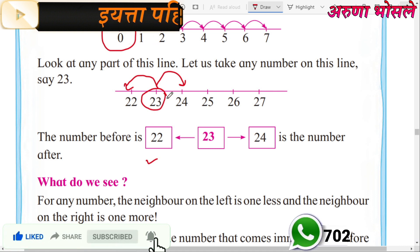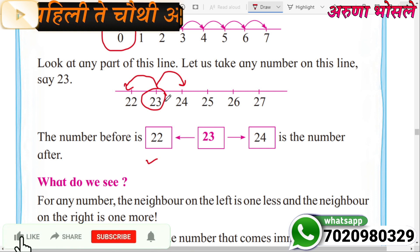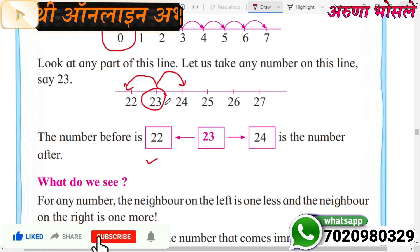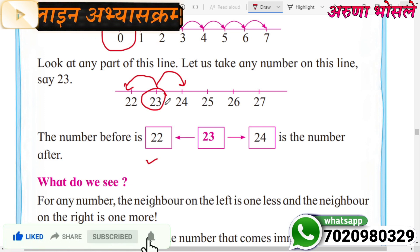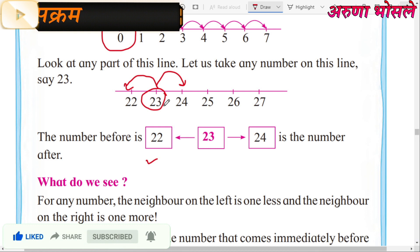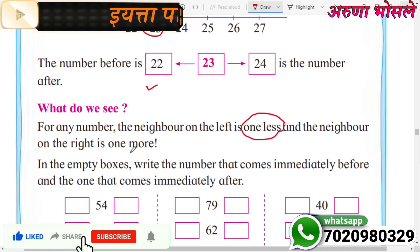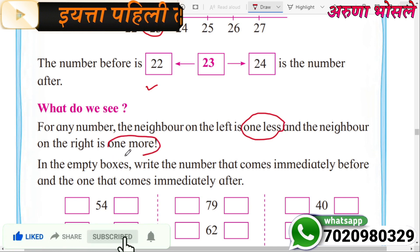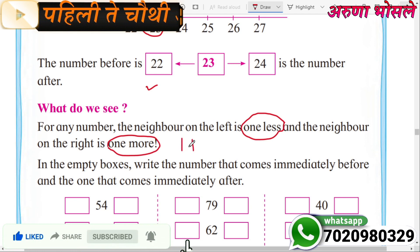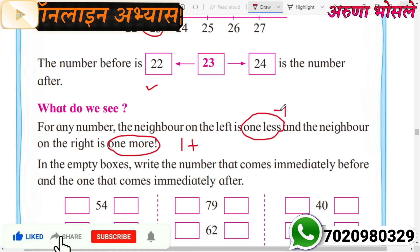What do we see? For any number, the neighbor on the left side is one less, and the neighbor on the right side is one more.